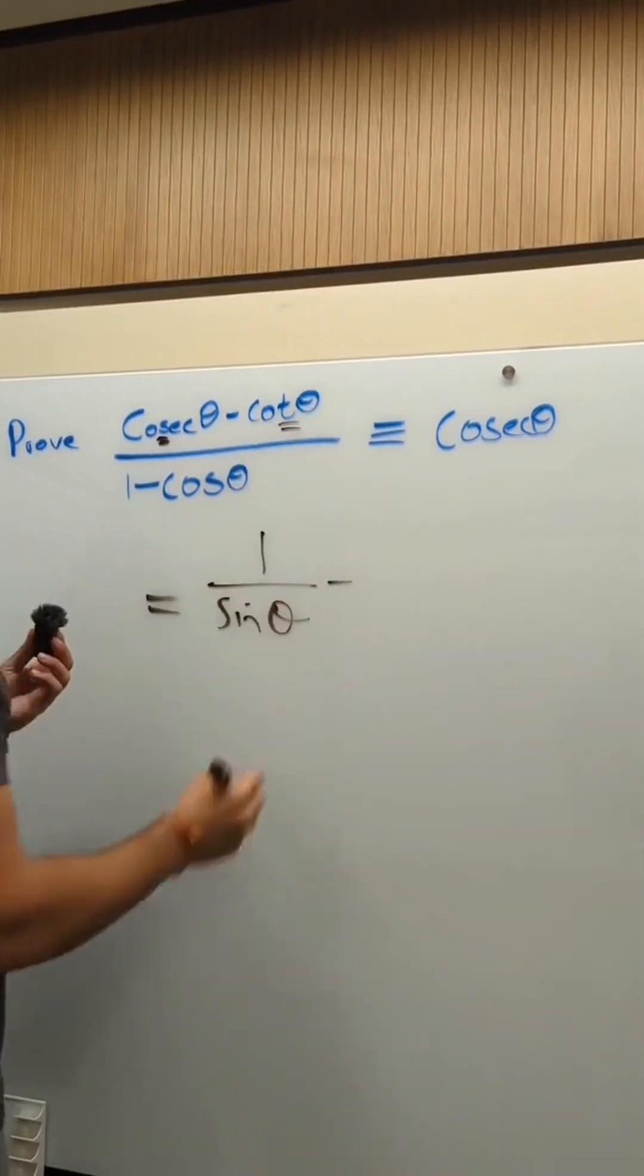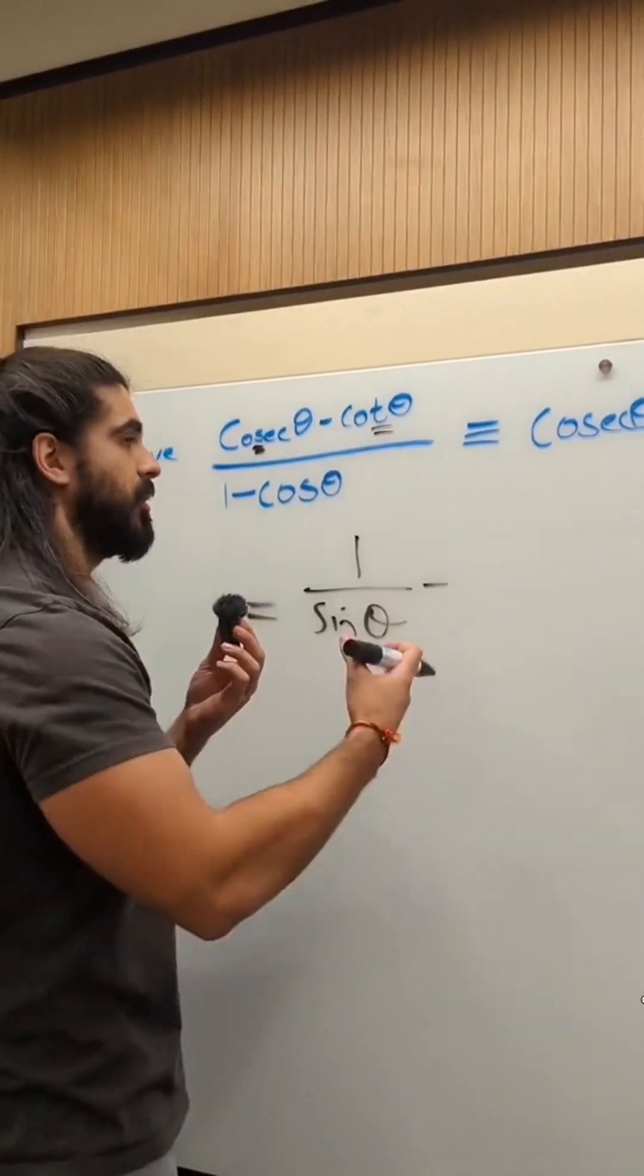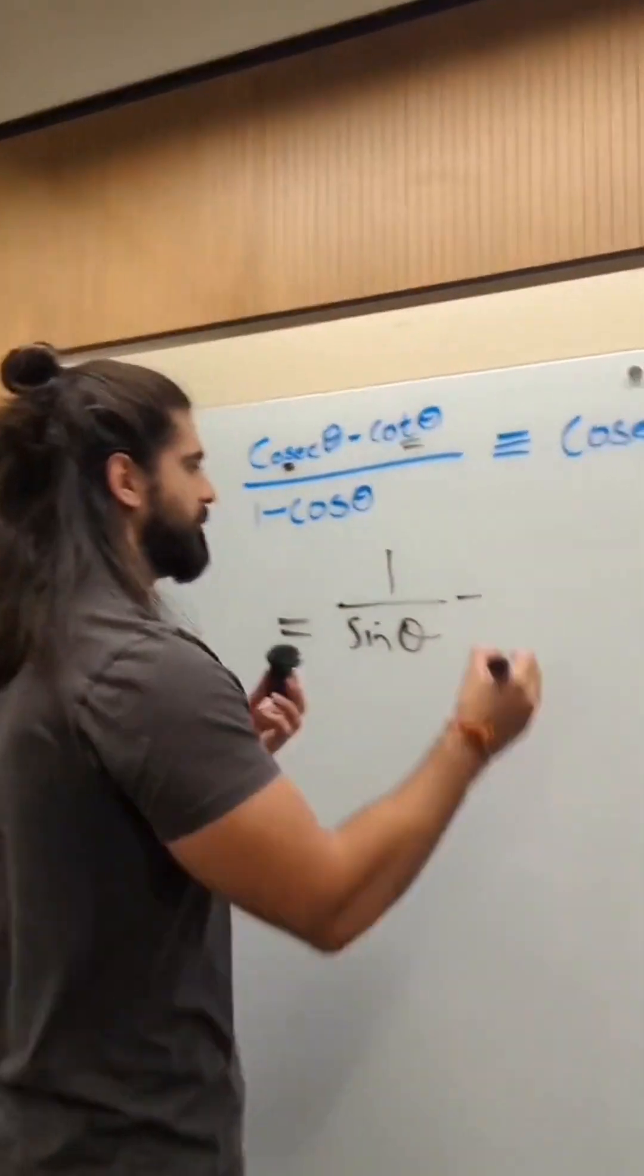Cot, look at the third letter, 1 over tan. But don't think of it like that. Tan is sine over cos. Cot is the reciprocal of that. That would be cos over sine.